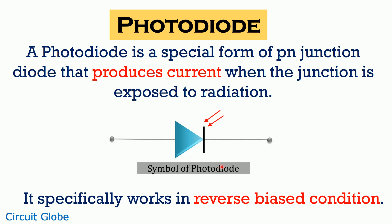It is specifically a reverse bias diode, that means it operates when reverse bias voltage is provided to it. Now let's move further and understand the operation of a photodiode.